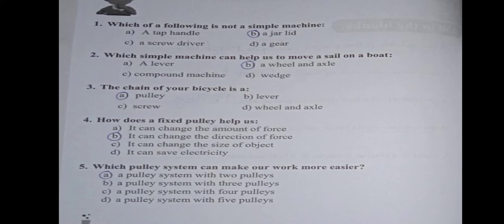Number 1 is which of the following is not a simple machine. B is the answer, a jar lid. Number 1's answer is a jar lid. B. Circle it.